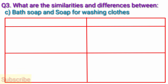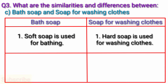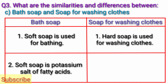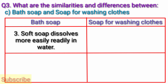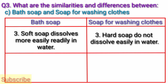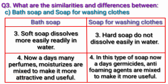Question C: Bath soap and soap for washing clothes. Answer: 1. Soft soap is used for bathing; hard soap is used for washing clothes. 2. Soft soap is the potassium salt of fatty acid; hard soap is the sodium salt of fatty acid. 3. Soft soap dissolves more readily in water; hard soap does not dissolve easily in water. 4. Nowadays many perfumes and moisturizers are mixed into bath soap to make it more attractive and useful, while for washing soap, germicides and foaming agents are mixed to make it more useful.